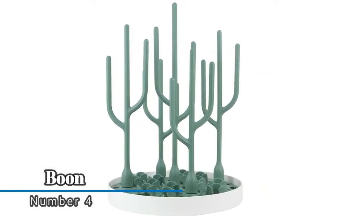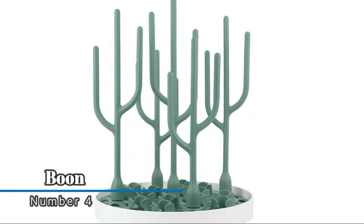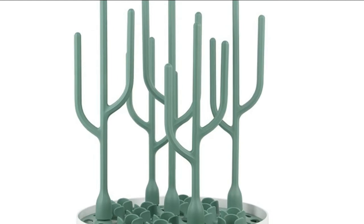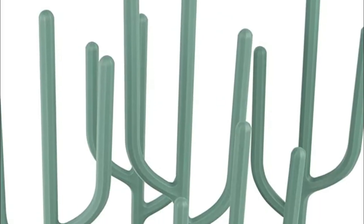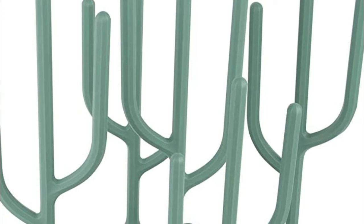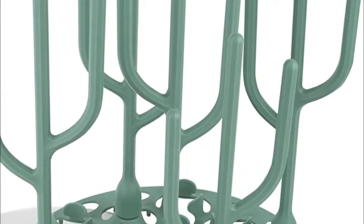Number four, Boon. Removable cacti, each with multiple branches that can arrange the way you choose, all on a tray that spins to help you reach items with ease. Two-piece tray design drains water to the bottom half, which can be removed and cleaned up easily.